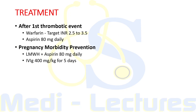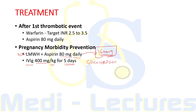For prevention of pregnancy morbidity, low molecular weight heparin along with aspirin 80 mg daily is given — this has been updated to 160 mg aspirin daily. Alternatively, IVIG 400 mg per kg body weight for 5 days may also prevent abortion related to APS. It is important to note that glucocorticoids have no role in preventing pregnancy morbidity.